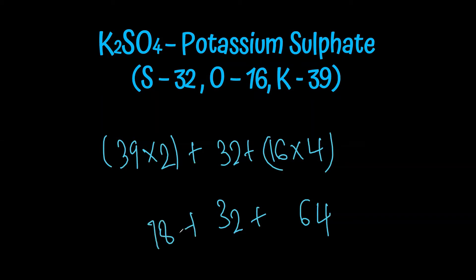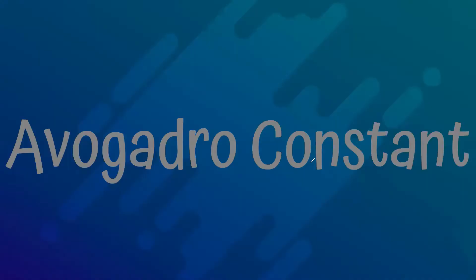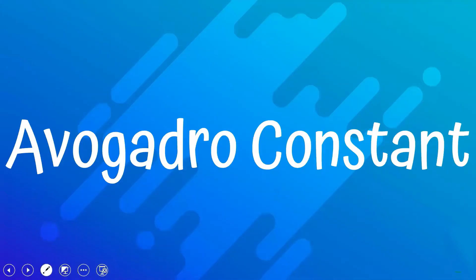Potassium sulphate K2SO4: two potassium atoms (39×2 = 78) plus one sulfur atom (32) plus four oxygen atoms (16×4 = 64). The sum is 78 + 32 + 64 = 174. The relative formula mass of potassium sulphate is 174.